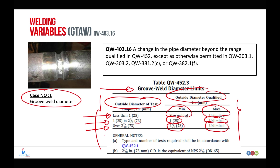Note that 73mm outside diameter equals nominal pipe size 2½ inch (DN65). For example, if the outside diameter of the test coupon is 2 inches, then the minimum qualified outside diameter is 1 inch (25mm) with an unlimited maximum. This covers the first case, which is the groove weld — pipe-to-pipe.